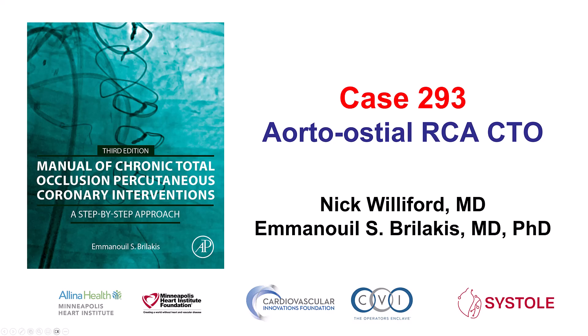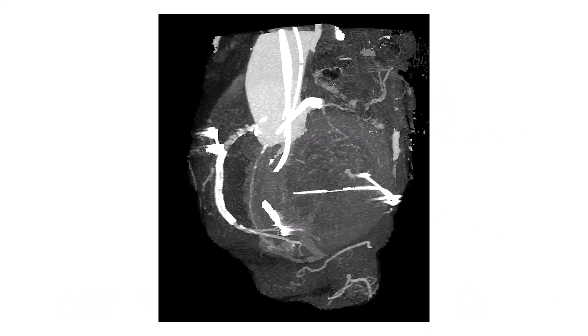This is Nick Williford and Manos Brilakis presenting case 293 for the Manual of CTO Interventions. This is a case of a FLAS aortoostial CTO of the right coronary artery. The patient presented with significant angina and was referred for PCI of the right coronary artery. This had a FLAS ostial occlusion on coronary CT on the MIP.